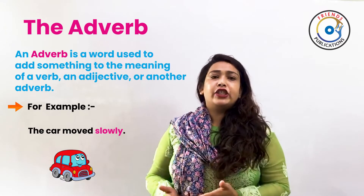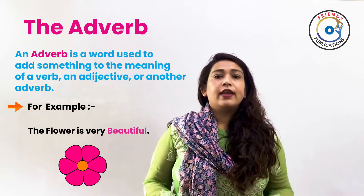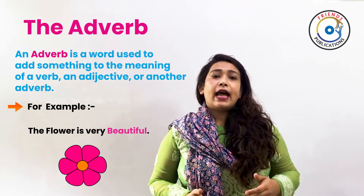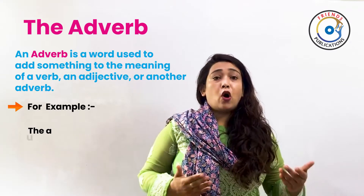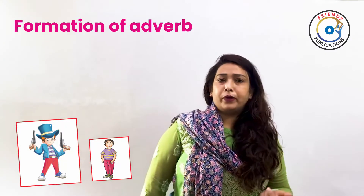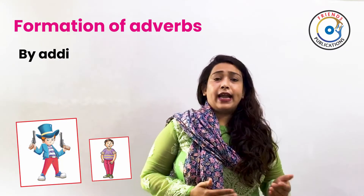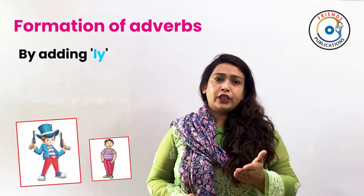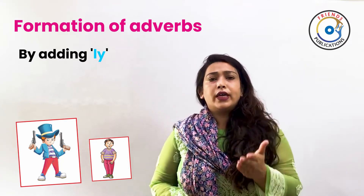Adverb modifying an adjective: the flower is very beautiful. Adverb modifying another adverb: the auction went very well. Now let's talk about the formation of adverbs. We can form an adverb by adding '-ly' to it, or by adding other words to it.